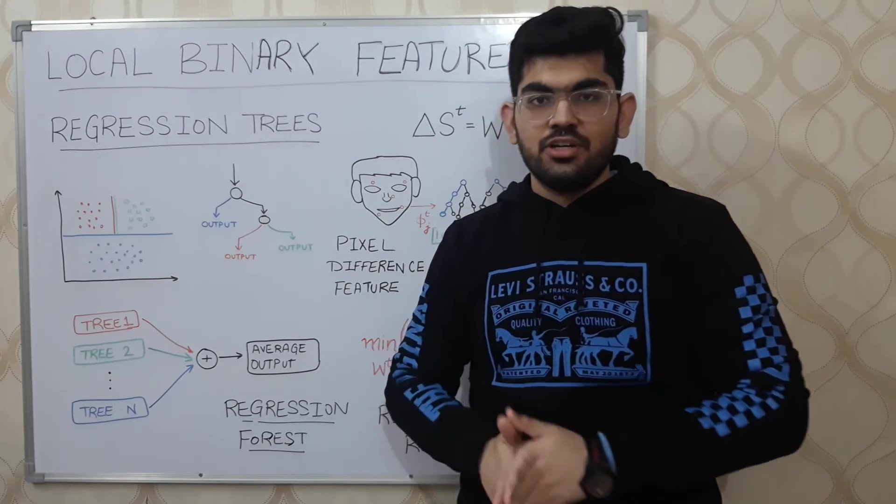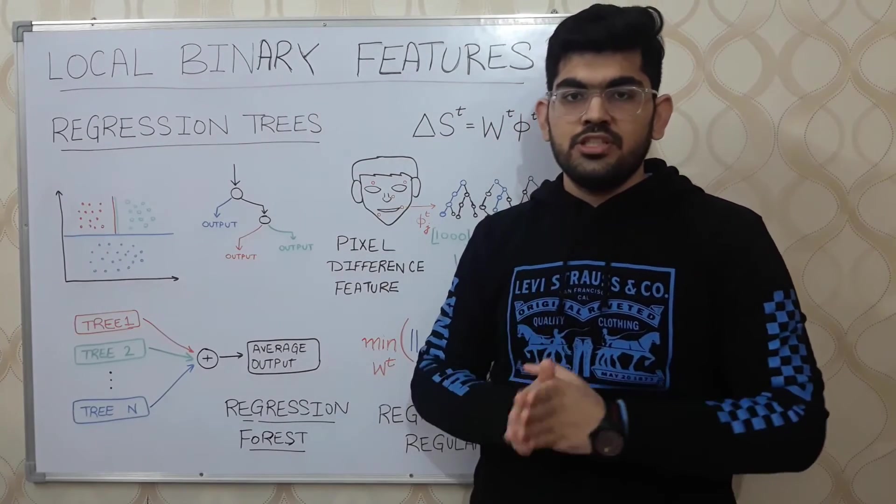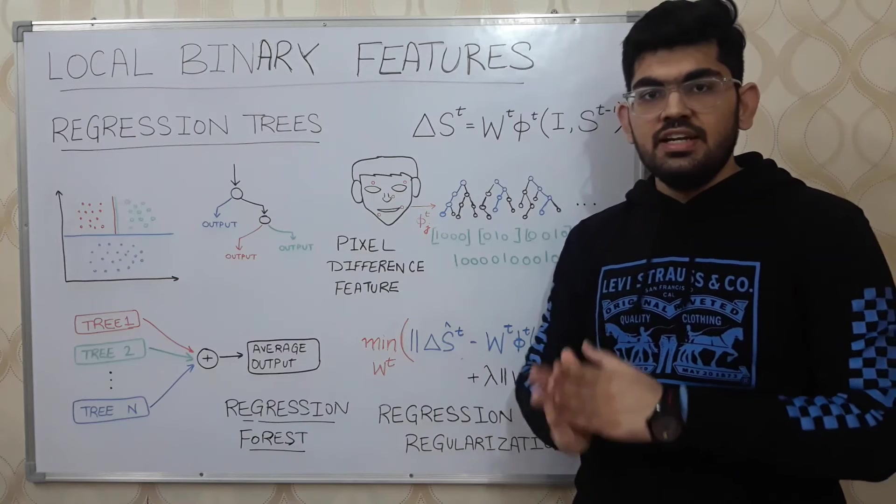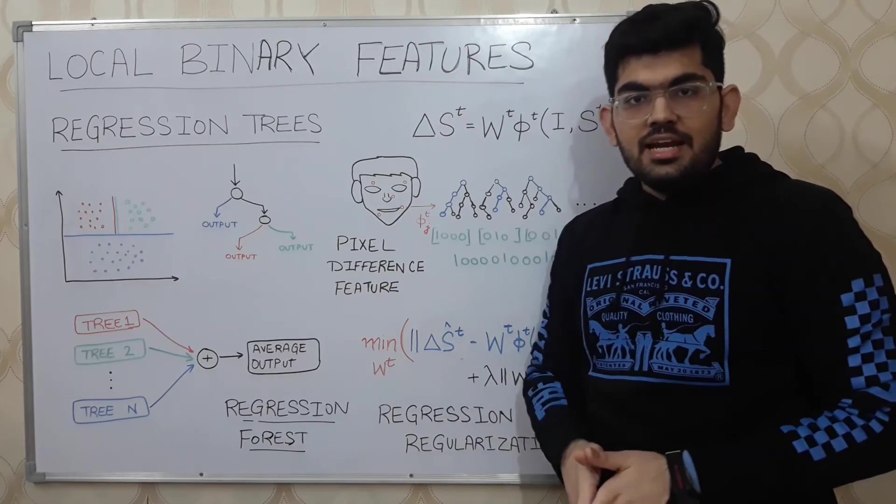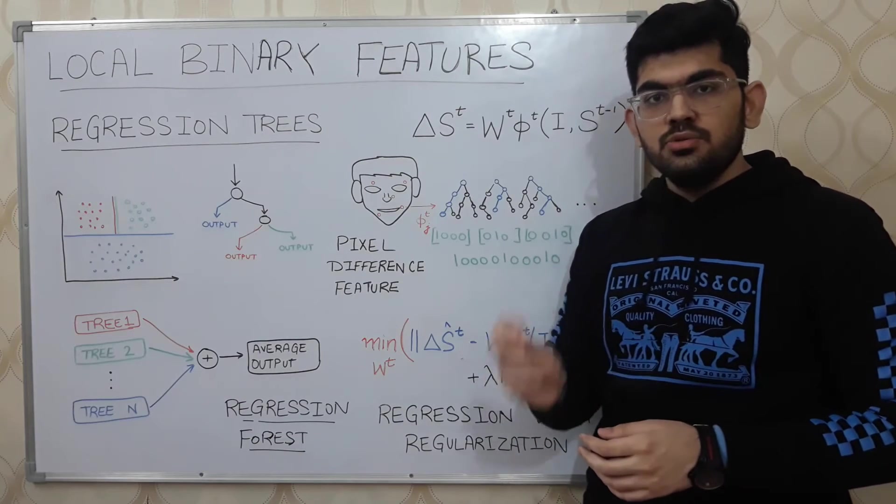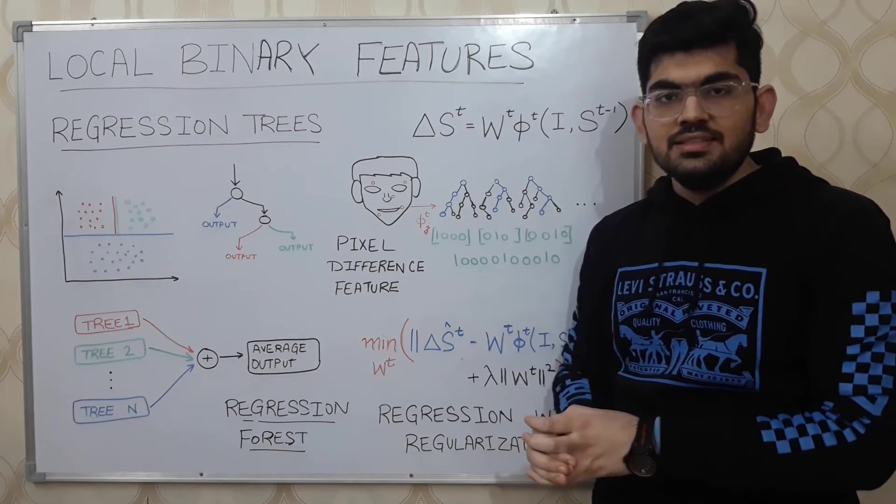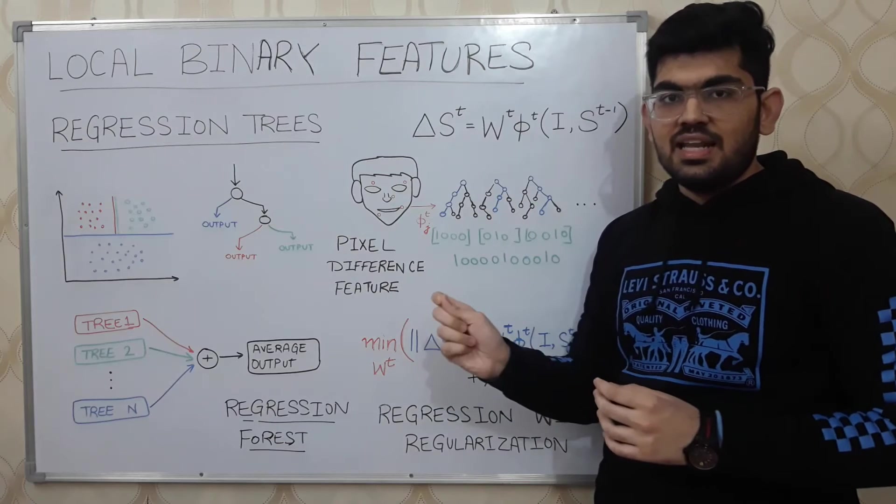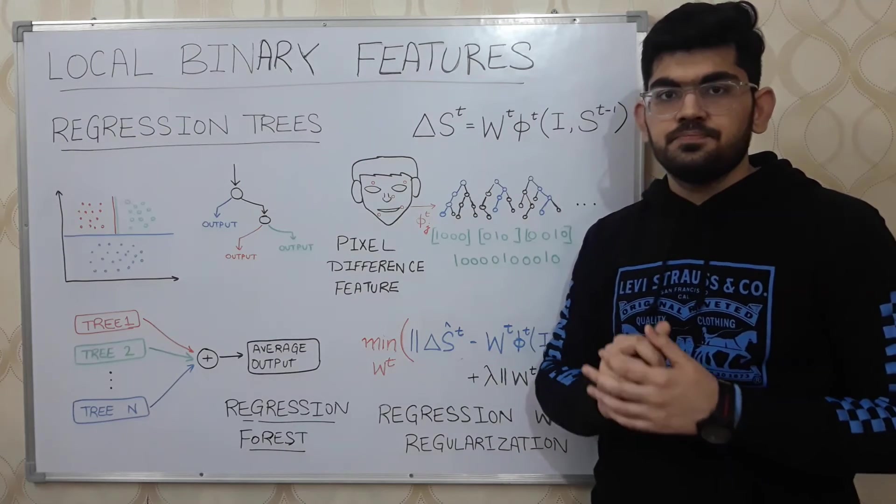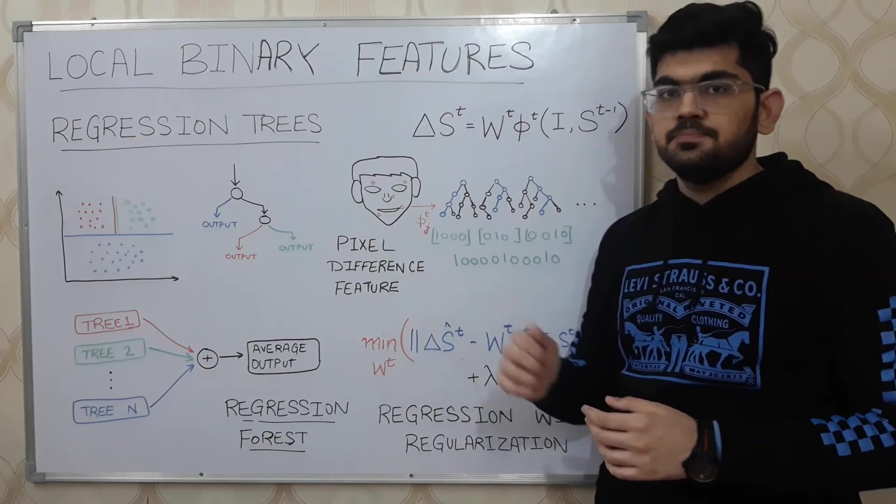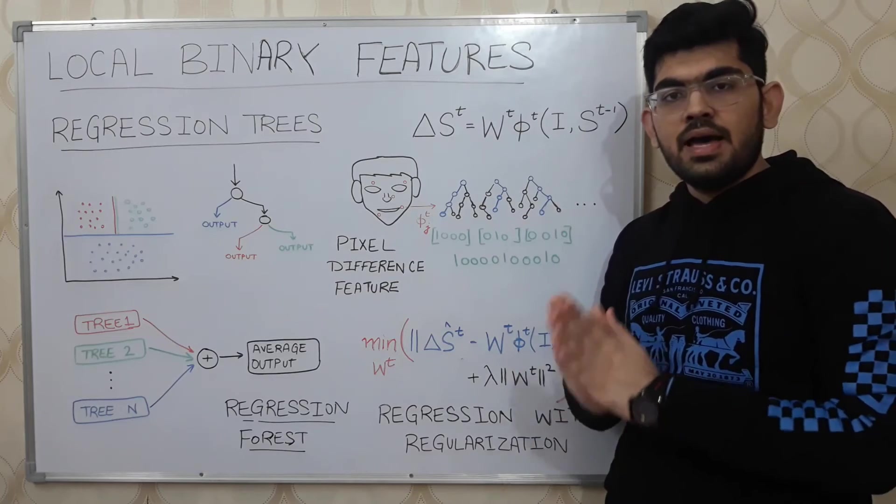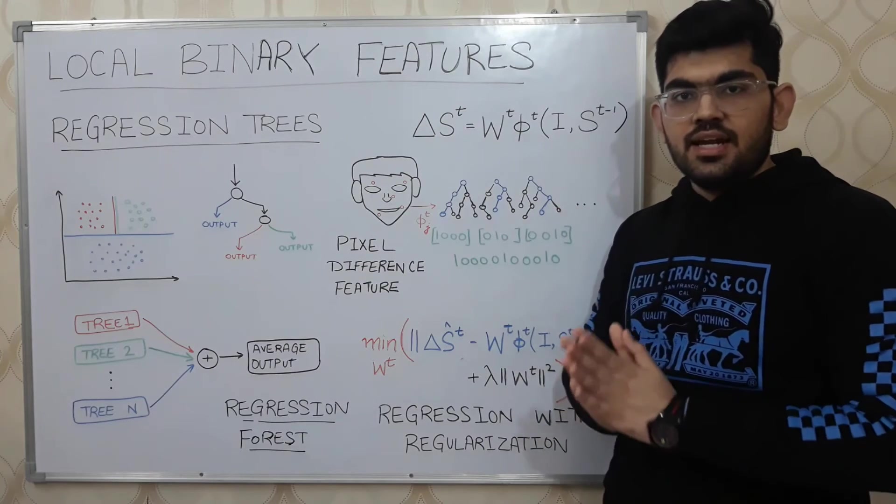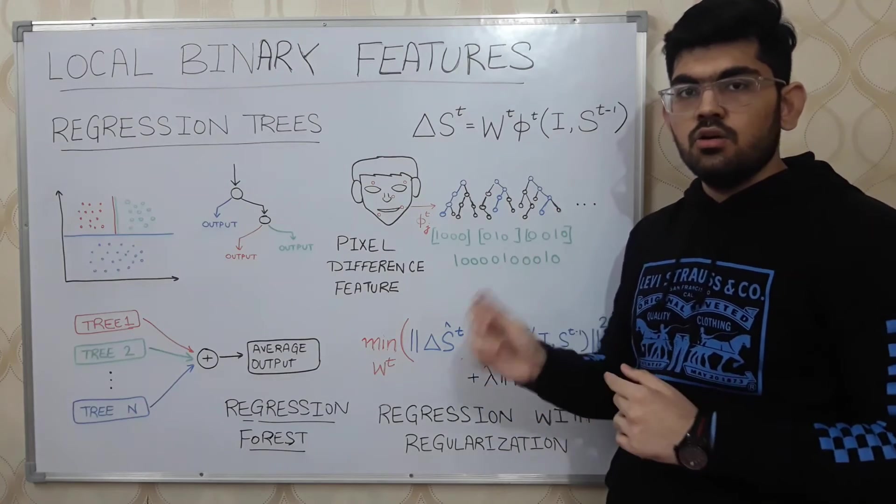And these random regression forests are what are used to model the projection function phi. For each iteration and for each landmark on the face, we train a random regression forest. The landmarks on a face are categorized by using the pixel difference feature. What that means is that given a single landmark, we calculate the difference of the pixel of that landmark with all the other landmarks. These are the features that we use to learn the landmarks. The random regression forests are formed by randomly sampling pixel difference features. And each of the tree in the forest is trying to predict the location of the landmark on the face.